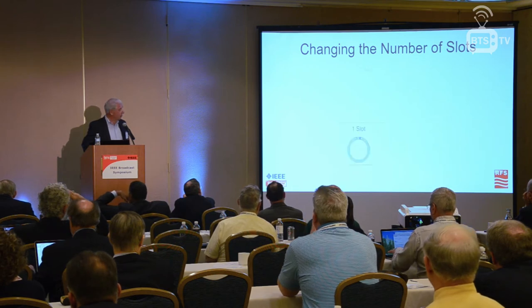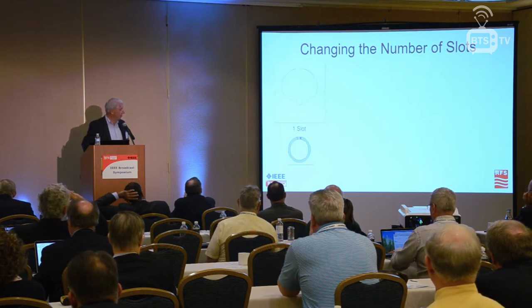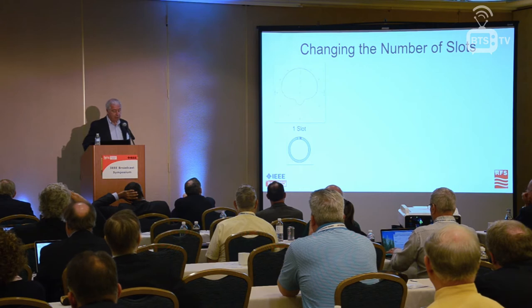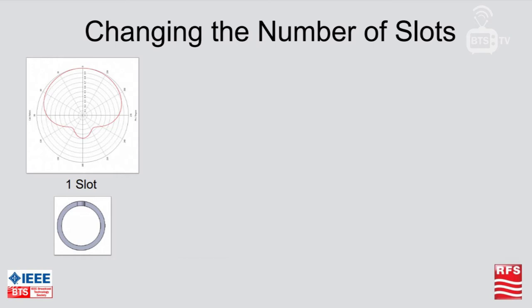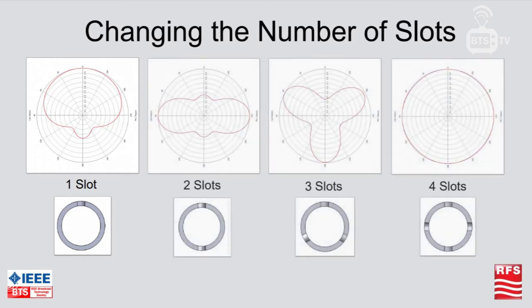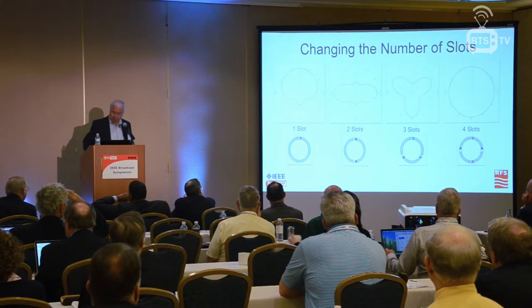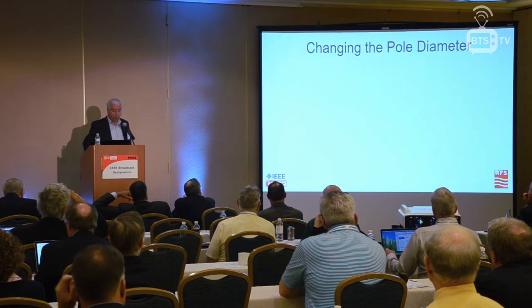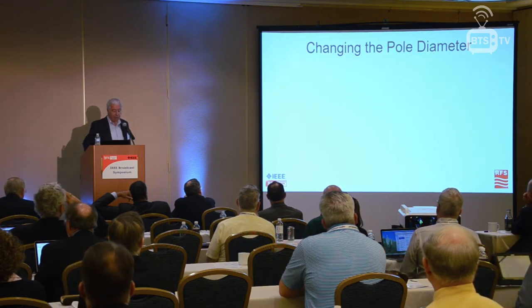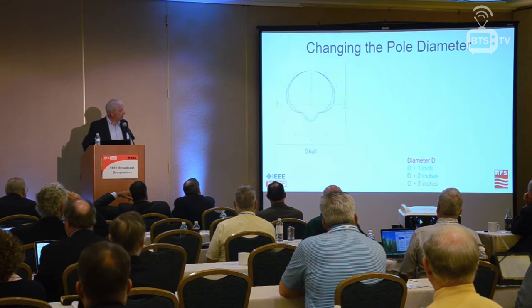If we change the number of slots: a single slot in a pole gives a cardioid pattern. Two slots gives a peanut pattern, three slots gives a tri-lobe pattern, and four or more slots generally gives an omni — on a smaller pole it could be three slots. Changing the pole diameter also has an effect on the pattern.